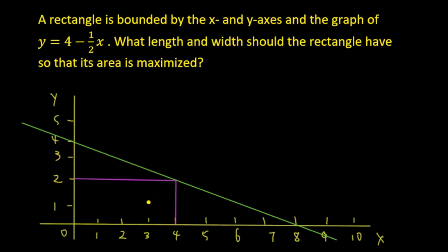For example, if the corner lies on this point of the curve, the length of the rectangle will be here and the width will be here. If it lies on this other point, the length will be longer but the width will be shorter. The question is: on which point should this corner lie so that the area of this rectangle is maximized?